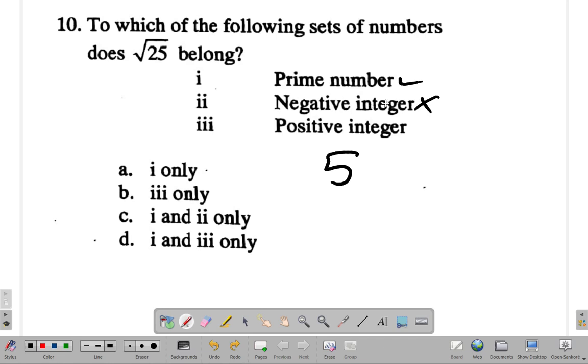But it's not a negative integer. Is it a positive integer? Yes. So looking at these, it seems like i and iii only, so the answer is d.